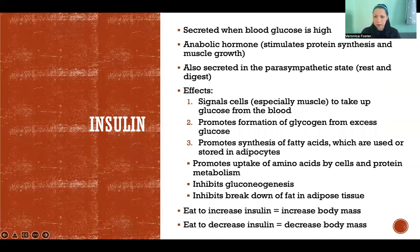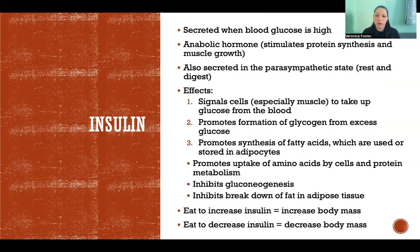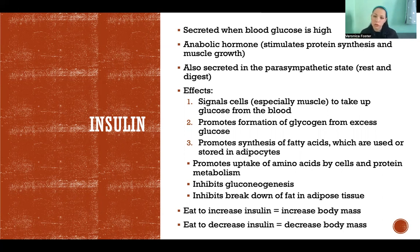The opposite is insulin — the hormone we secrete when blood glucose is high. Insulin is an anabolic hormone, meaning it stimulates protein synthesis and muscle growth, as opposed to catabolic hormones which stimulate breakdown. Insulin is also secreted in a parasympathetic, rest-and-digest state, which makes sense because insulin helps feed our cells. It's part of what we do when absorbing nutrients through digestion — we need insulin to counteract all the sugar we're absorbing. It also stimulates protein synthesis and muscle growth, activities we do in a restful state rather than fight or flight.